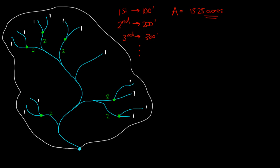Where a two and a two meet, they make a third-order stream — so here they'd be a three. Now here we have a two and a three. Remember, if two different orders come together, the one with the highest numerical value takes precedence. So a 3 and a 2 — the higher number is 3, so this is a third-order stream. A 3 and a 1 come together and make a third-order stream. A 2 and a 2 here make a third-order stream. Then a 3 and a 3 come together to make a fourth-order stream. A 2 and a 4 come together and also make a fourth-order stream. So we've labeled everything using Horton's Law.